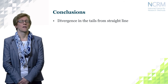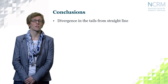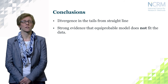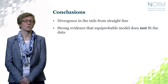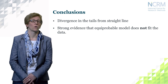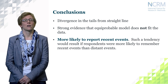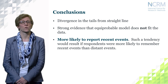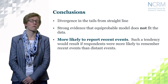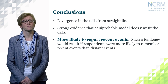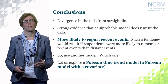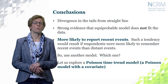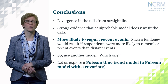Clearly there is divergence in the tails from the straight lines, and there is overall strong evidence that the equi-probable model doesn't fit the data well — which maybe isn't too surprising. The data shows that respondents are more likely to report recent events than distant events, as people tend to remember recent events more easily. There is strong evidence we should use another model, and we are going to explore the Poisson time trend model — a Poisson model with a covariate.